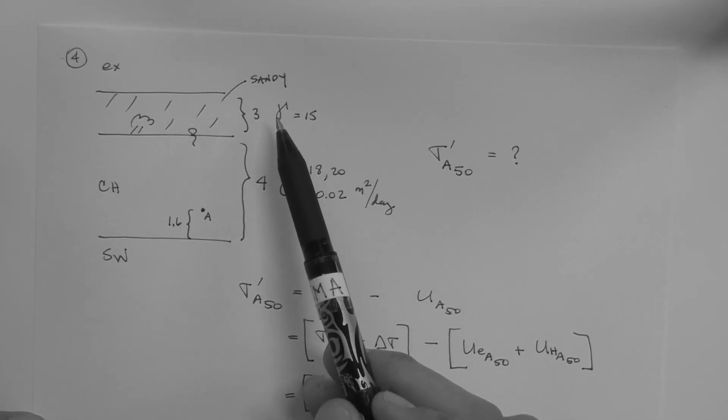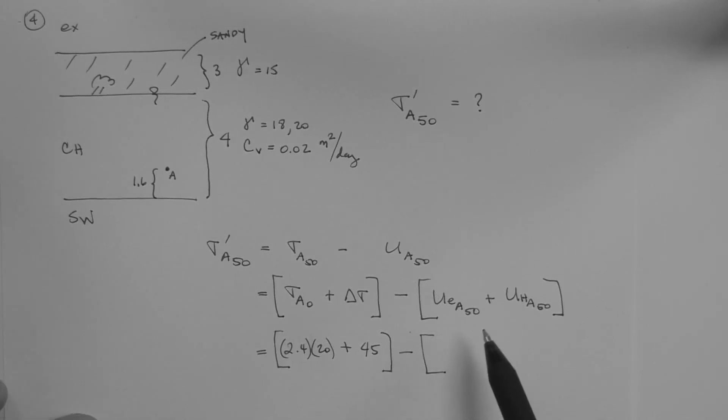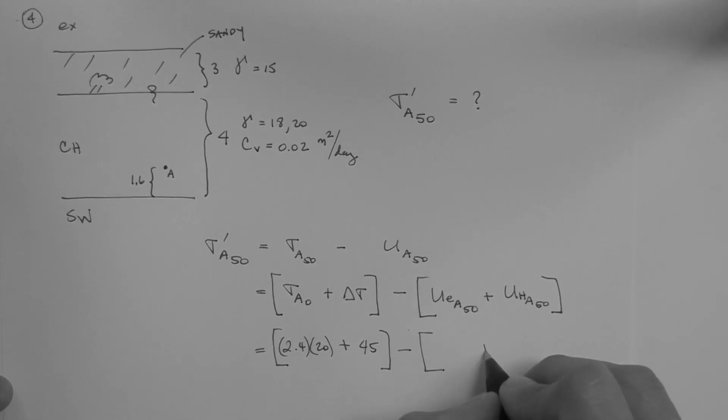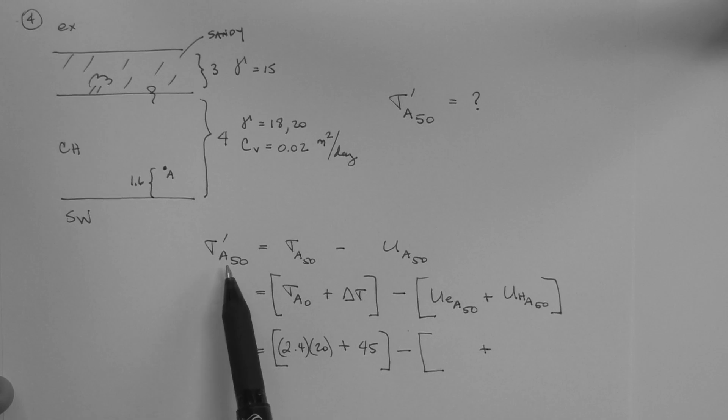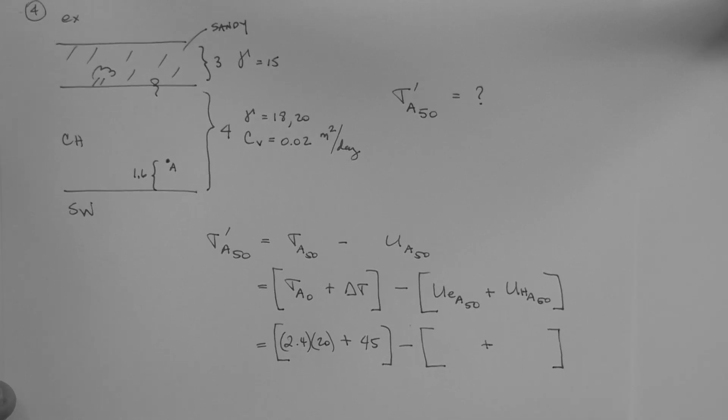Delta Sigma, 3 times 15, 45 kPa. Excess pore pressure at point A at time equals 50 days is what we're looking for in this problem, actually, so that we can get this. That's the question. And so we're going to be doing that using the chart with isochrons.